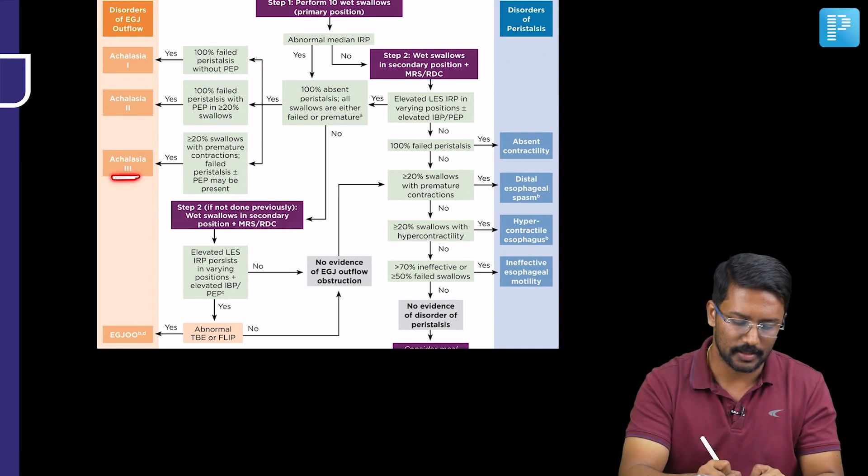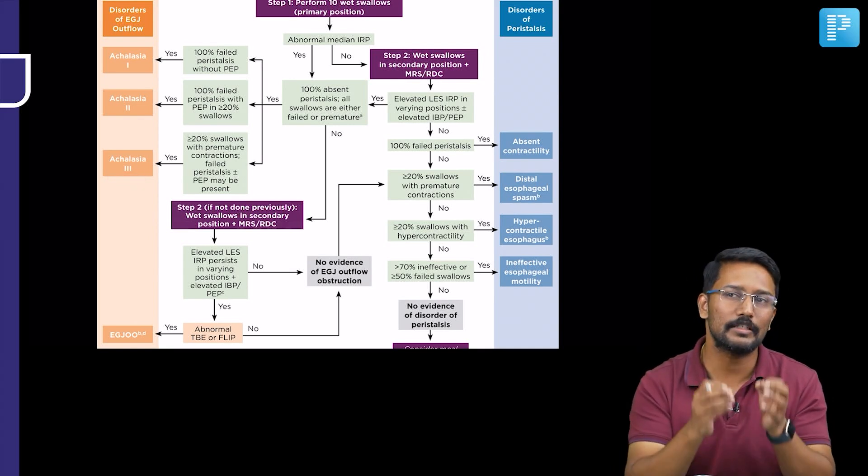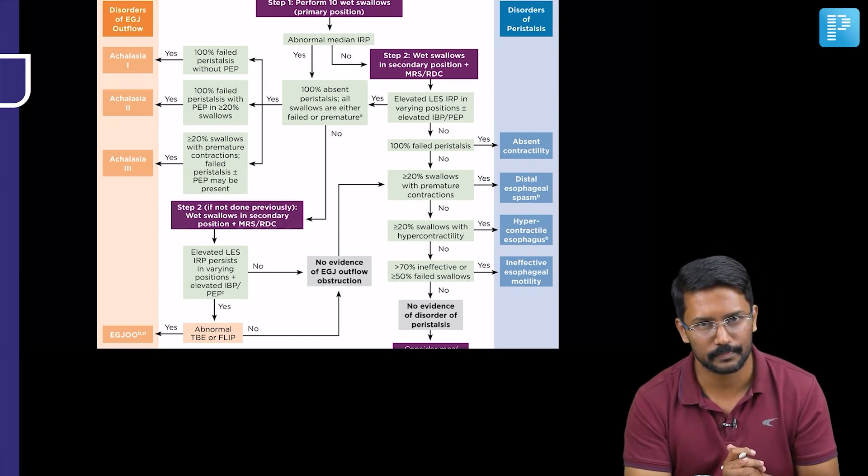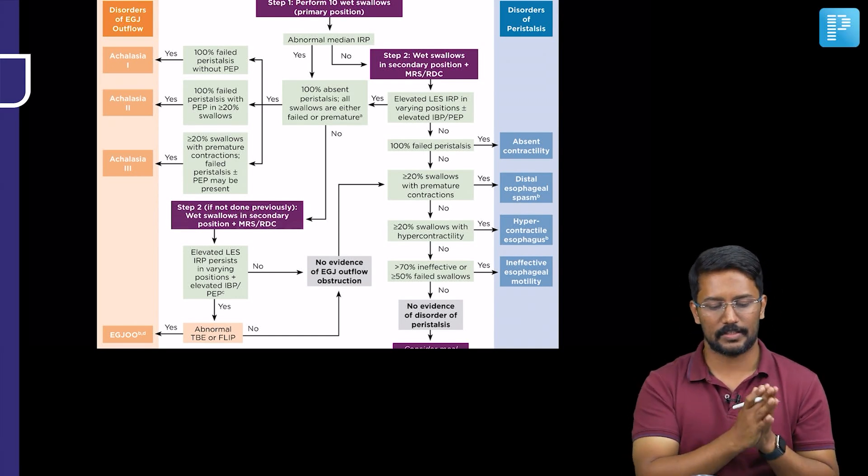So because of that, we call these patients as achalasia cardia type 3. So here also you need at least 20% of the swallows to show that kind of spasmodic contractions of the esophagus. That is the achalasia cardia.